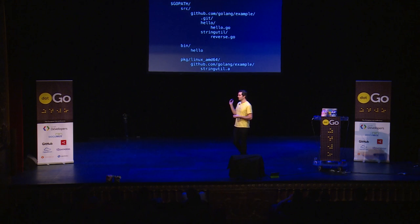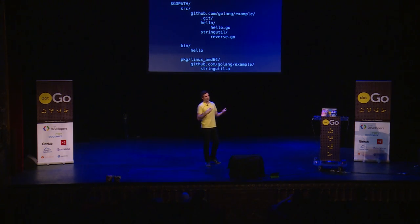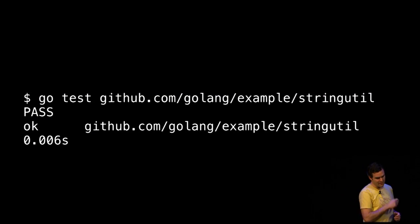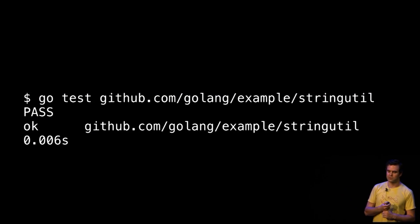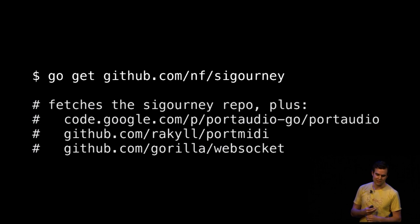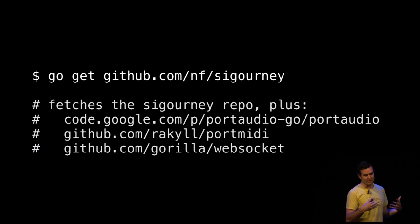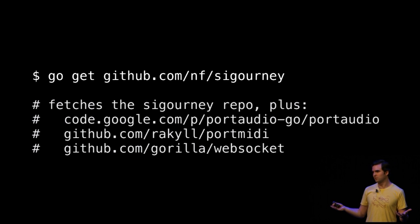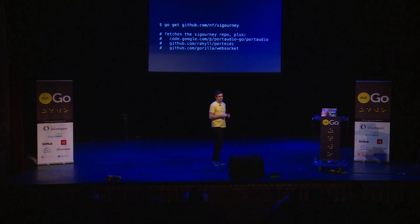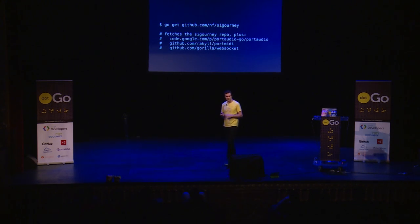So now the workspace looks something like this, and that stringutil.a file can be used for incremental builds. The go tool is also responsible for running tests and fetching remote dependencies. Because we use the full repository address for the base of the import path, the go tool can just resolve dependencies across the internet from anywhere — which is really convenient. This is an audio synthesizer I wrote that uses a few external packages, and that's what gets pulled in when you run go get.